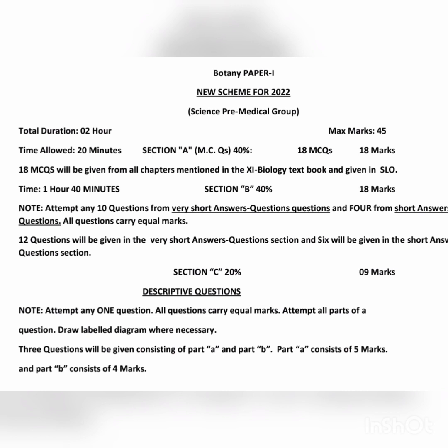After that you will attempt short answers — four short answers, each having two marks, making 18 marks for Section B. Then you have Section C, which includes nine marks, in which you attempt Part A and Part B. Part A has five marks and Part B has four marks. Overall, Botany 1 has 45 marks: 18 marks for MCQs, 18 marks for Section B short and very short answers, and nine marks for Section C long questions.